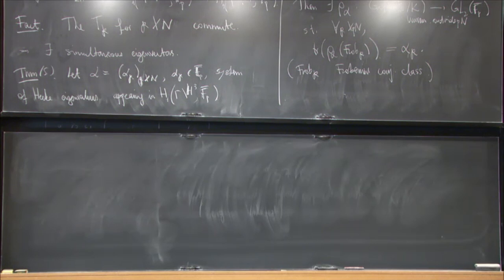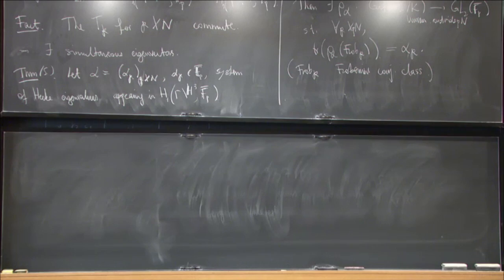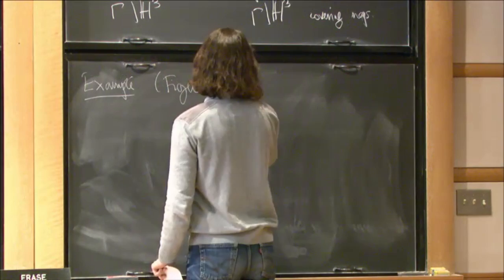And so, I should use this blackboard. In the rest of today's lecture, I want to just give an example of what this means. So, the concrete, take an eigenvalue system and the concrete Galois representation attached to it. And so, I took the example from the thesis of Figueiredo.